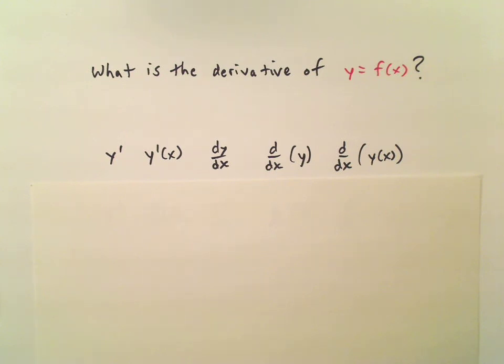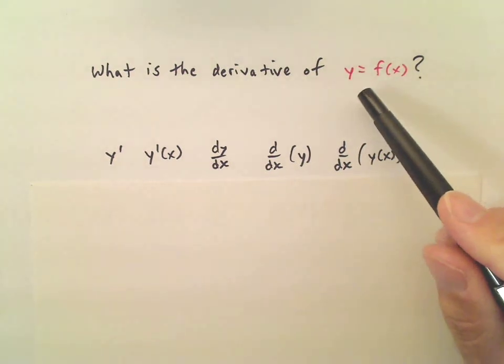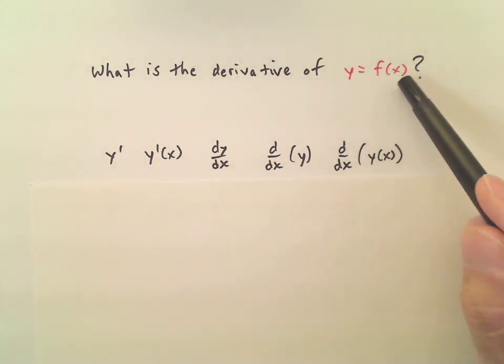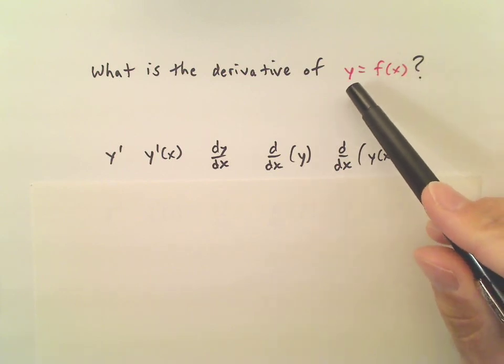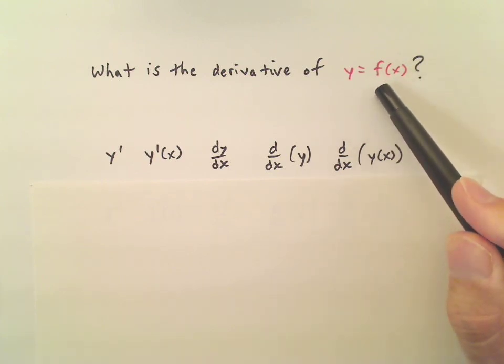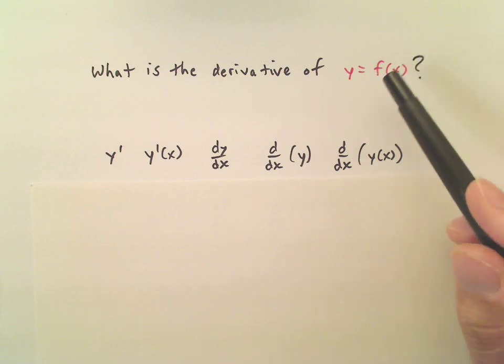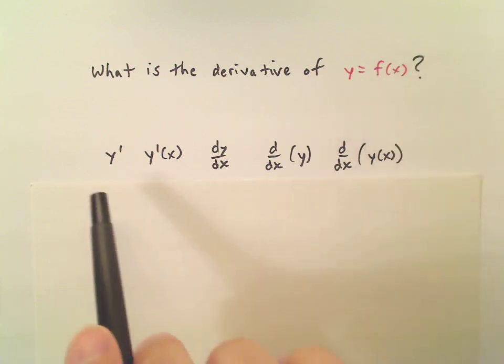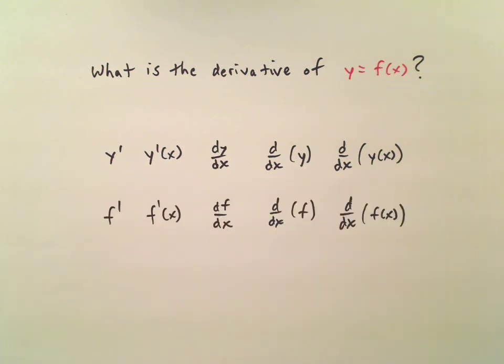This is not the whole story either because whenever you see something in this form y equals f of x, you should think of the letters y and f as being interchangeable. So wherever you see the letter y in any of these expressions here, you can change that into an f. There you go.